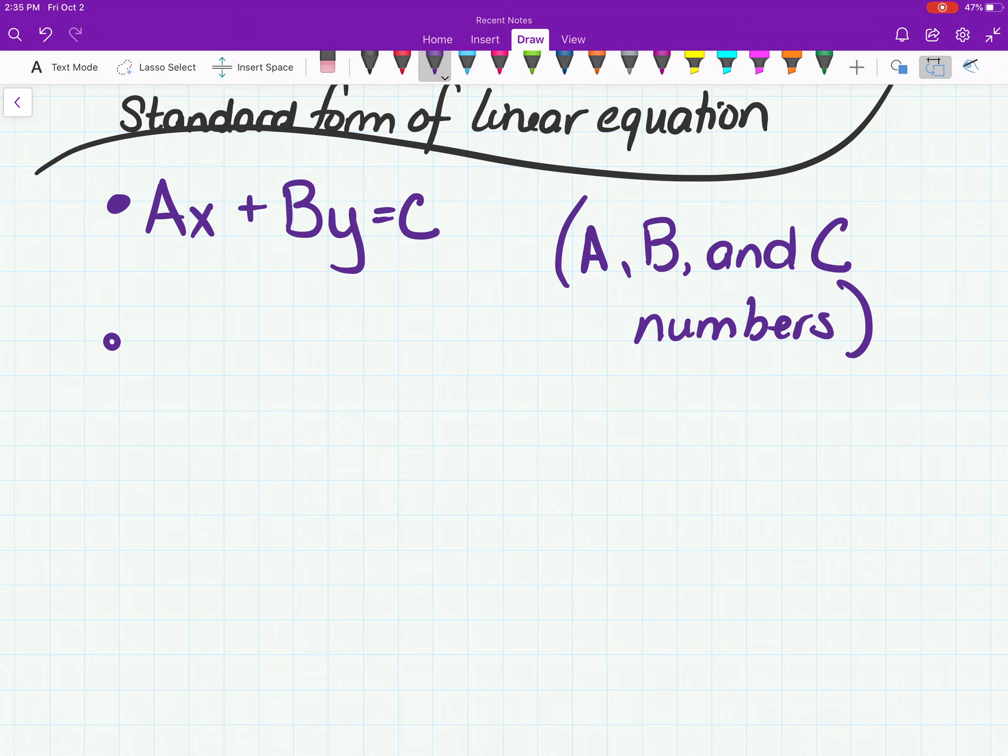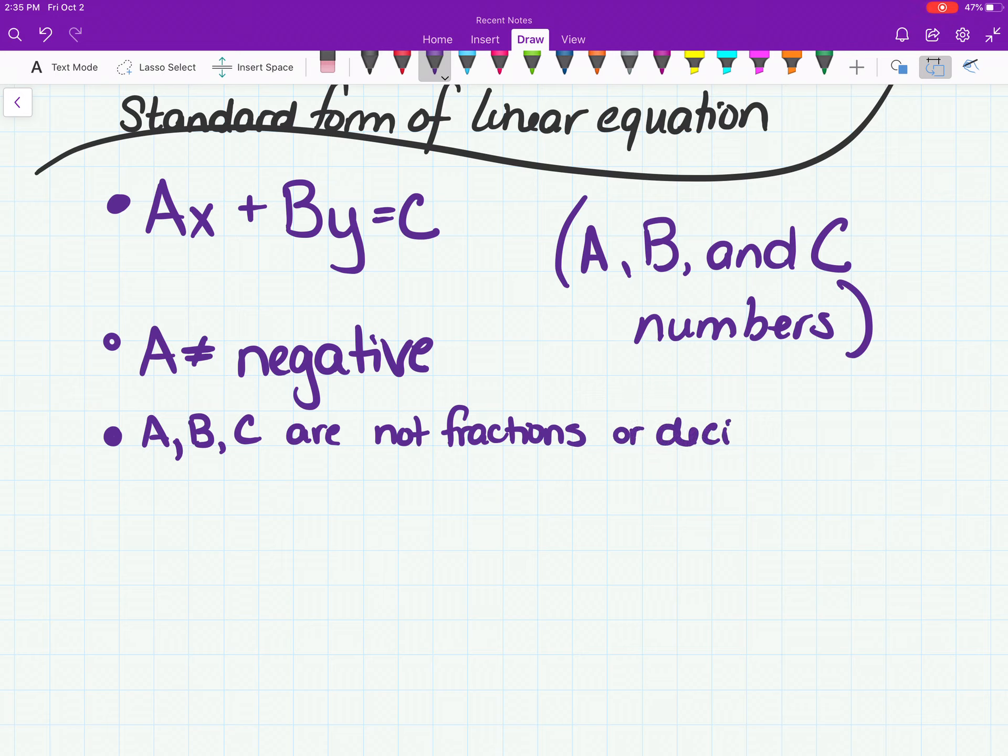The next thing you have to check is that A cannot be negative. So we've got to make sure that A is not negative. If it is negative, we're going to fix it. The next thing we have to do is we have to make sure A, B, and C are not fractions or decimals.